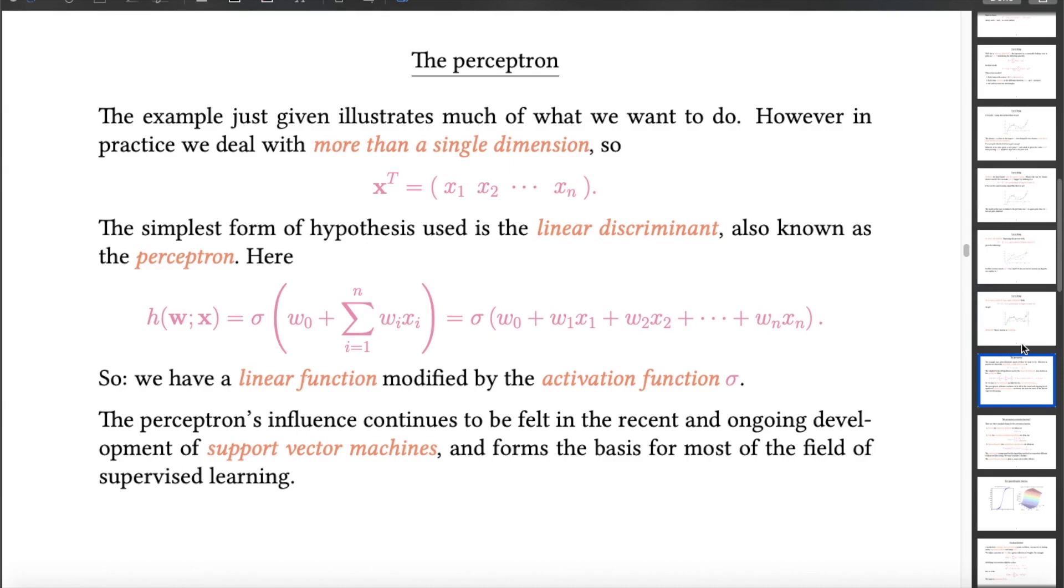But now we're going to focus on something much more specific. Obviously, in practice, we're going to deal with more than a single dimension. We're not just going to have a single feature x, but we're going to have n features. So we're therefore trying to do this kind of curve fitting, but in an n-dimensional space. And the simplest possible way, really, in which you can achieve this is to use a linear discriminant. Now, for historical reasons, these are also called perceptrons. But really, all they do is compute a linear function, and then pass it through something that usually looks a bit like a step function, and that generally has the name activation function.